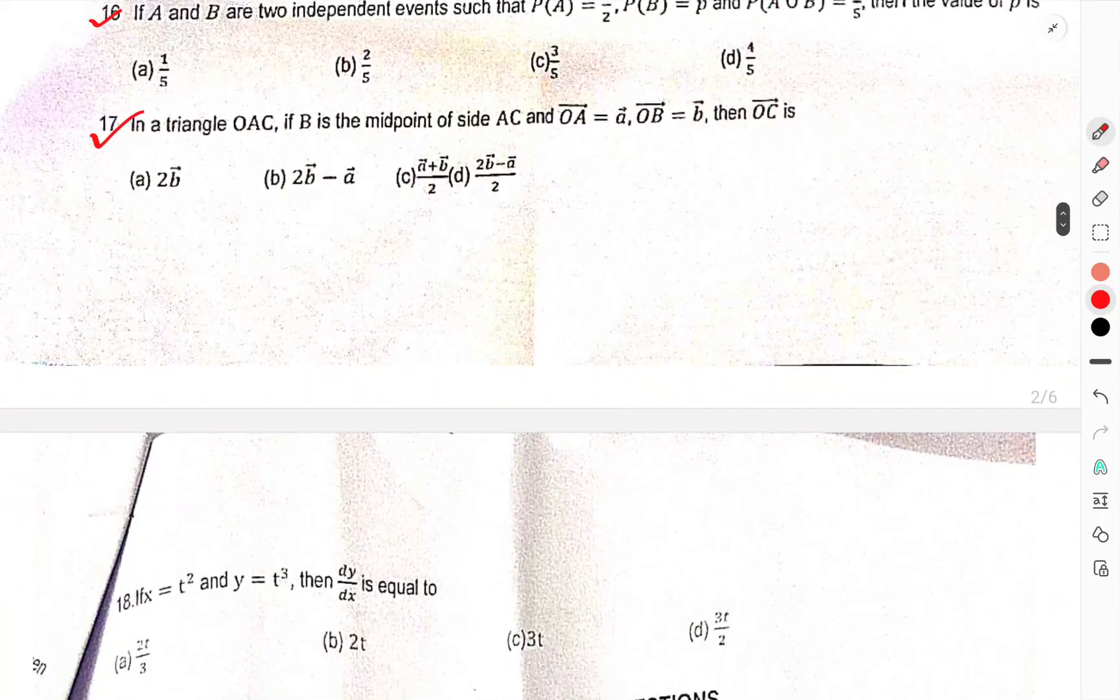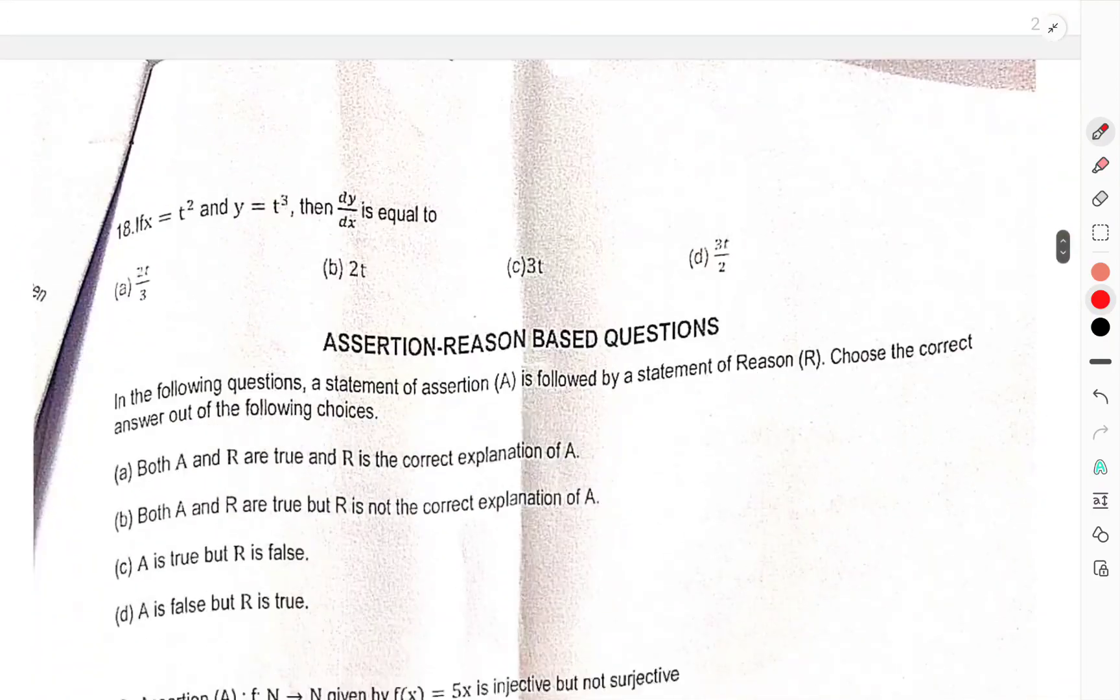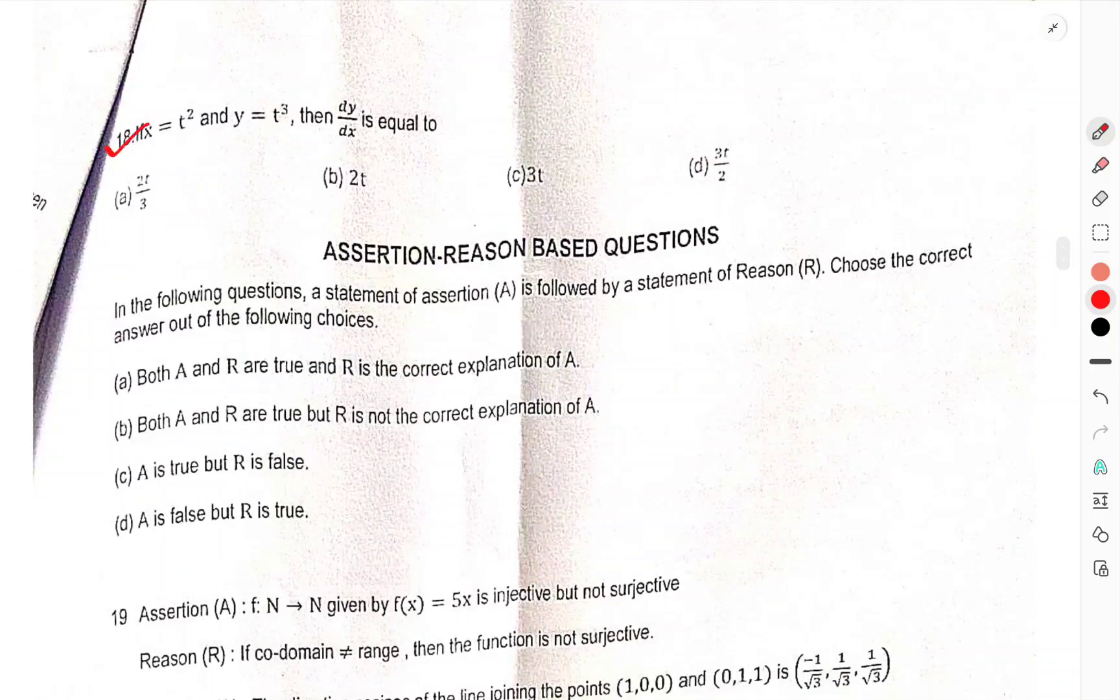In a triangle, OAC B is midpoint of side AC, then OC is. Question number 18, X is equal to T square, Y is equal to T cube, DY by DX is equal to 2.